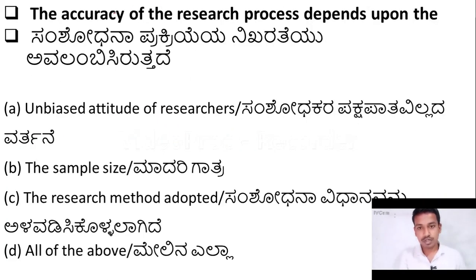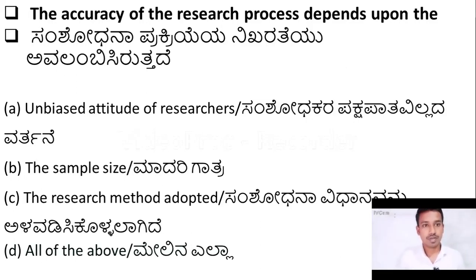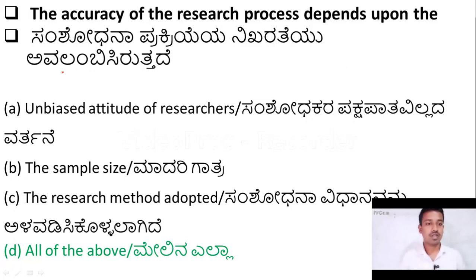The next question: the accuracy of the research process depends upon — option A: unbiased attitude of researchers; option B: the sample size; option C: the research method adopted; option D: all of the above. The accuracy of the research process depends upon the unbiased attitude of researchers, the sample size, and also the research method adopted. So option D — all of the above — is the right answer.